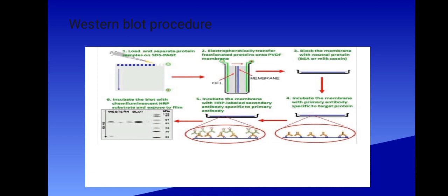Number three: block the membrane with neutral protein, that is BSA or even milk casein. Number four: incubate membrane with primary antibody specific to target protein.